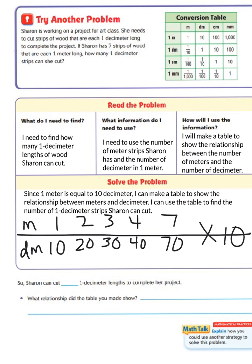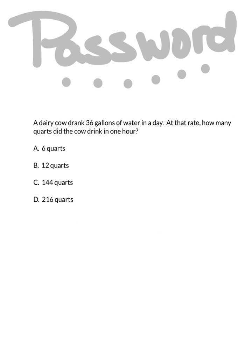So, Sharon can cut 71 decimeter lengths to complete the project. So, our last question, what relationship did the table you made show? Well, the table shows the relationship between meters and decimeters. One meter equals 10 decimeters.